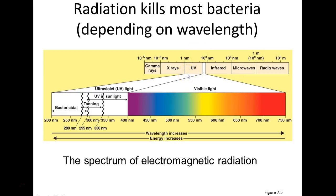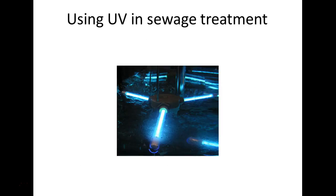UV causes tissue damage and gives you a sunburn. X-rays go right through your body, and gamma rays we associate with nuclear bombs. A lot of electromagnetic radiation is strong enough to kill microbes and is used as such. You can see here an ultraviolet light gauntlet for the treatment of sewage — you homogenize your sewage and expose it to ultraviolet light, and the microbes die rapidly.